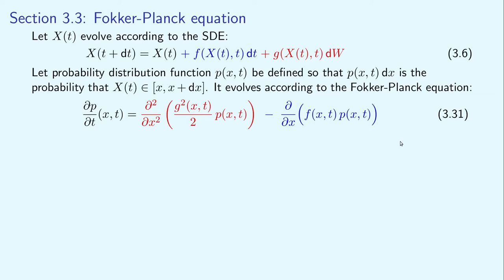The Fokker-Planck equation is the partial differential equation for the probability distribution function p, which is defined so that p times dx is the probability that x_t is in the interval x. Here, x_t evolves according to the stochastic differential equation. In our previous lecture, we interpreted the SDE using our computational definition, and we showed that we can use it to compute the time evolution of individual stochastic realizations.